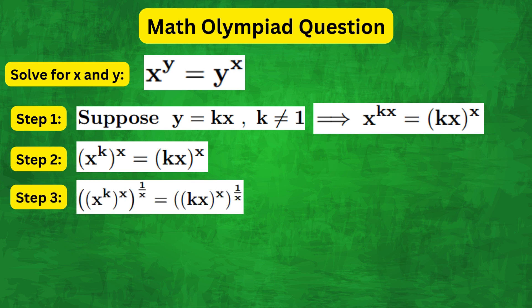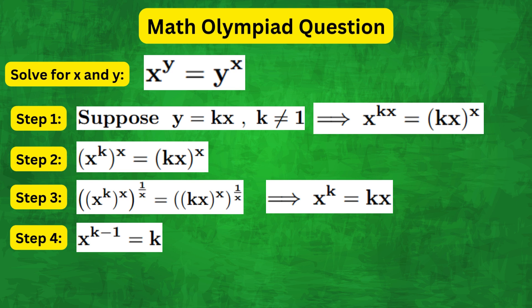And then taking the power 1 over x on both sides, we get x to the k equals kx, and then moving the x to the left, we get x to the k minus 1 equals k.